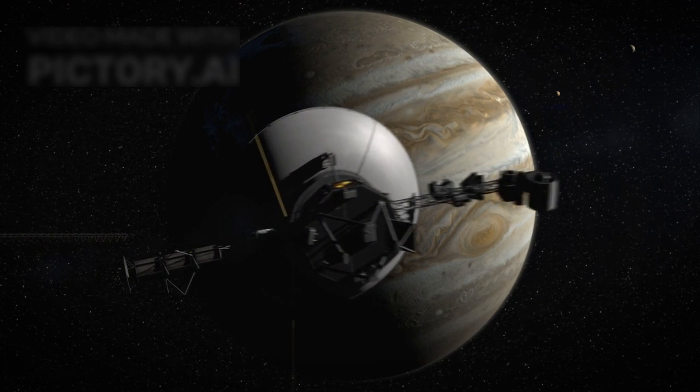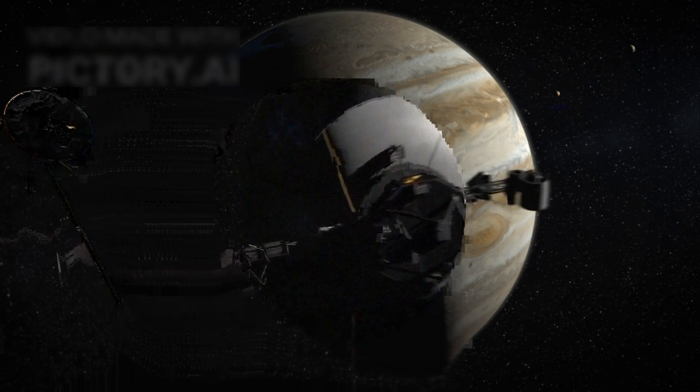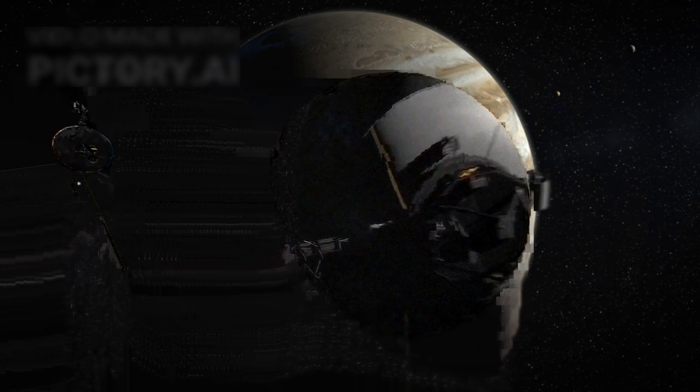The heliopause is the boundary where the sun's influence fades and interstellar space begins. Voyager 1 became the first human-made object to enter this mysterious realm, where forces beyond our solar system dominate.